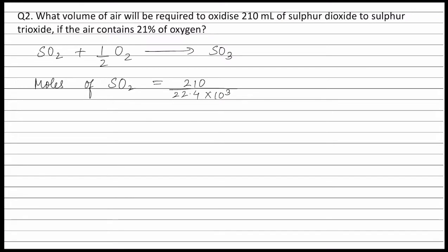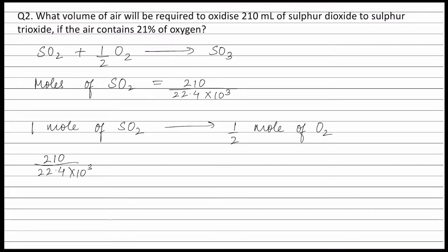As seen from the balanced equation, one mole of sulfur dioxide requires half mole of oxygen to change into sulfur trioxide. Therefore, 210 / (22.4 × 10³) moles of sulfur dioxide will require ½ × 210 / (22.4 × 10³) moles of oxygen.